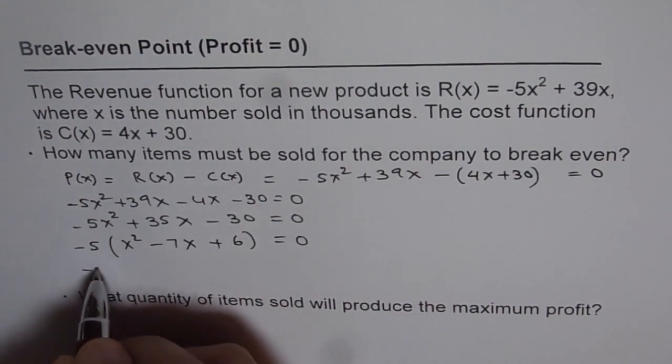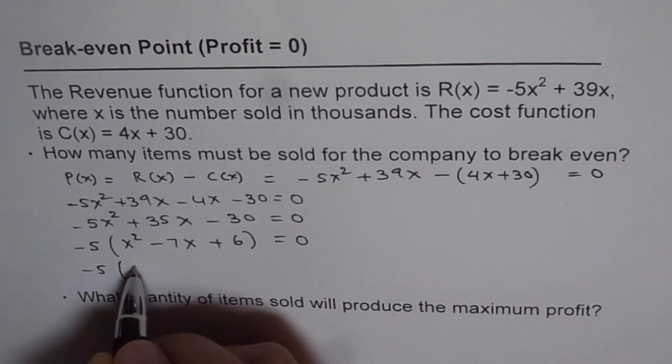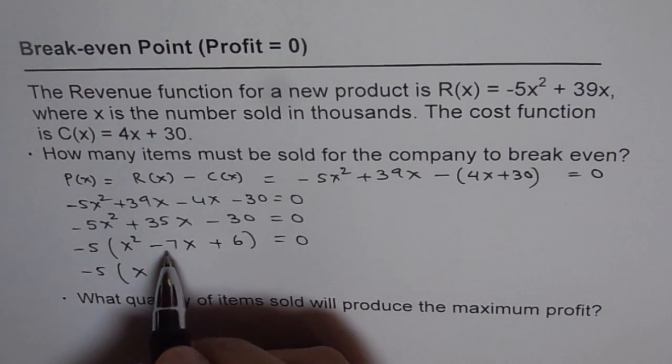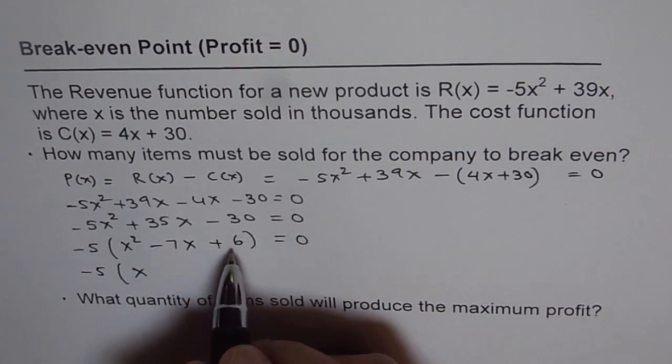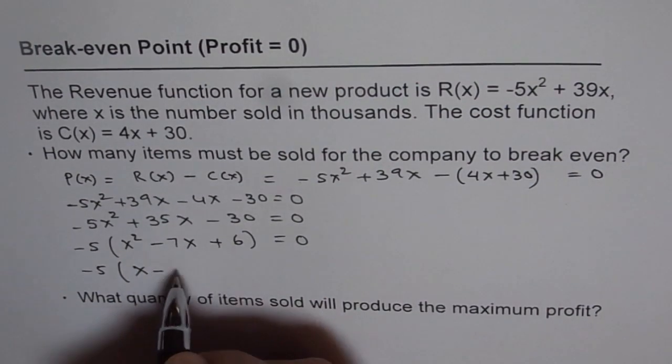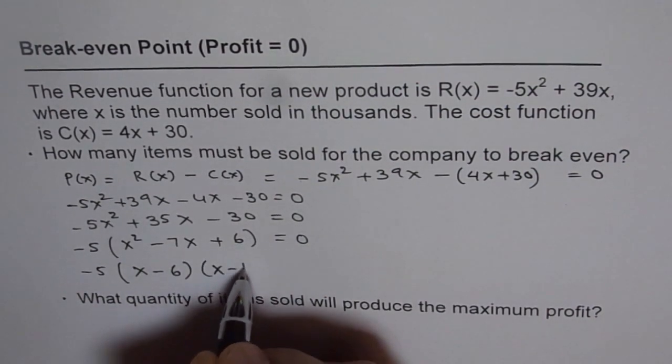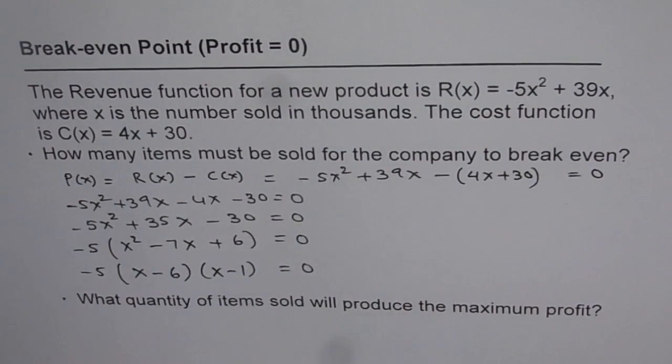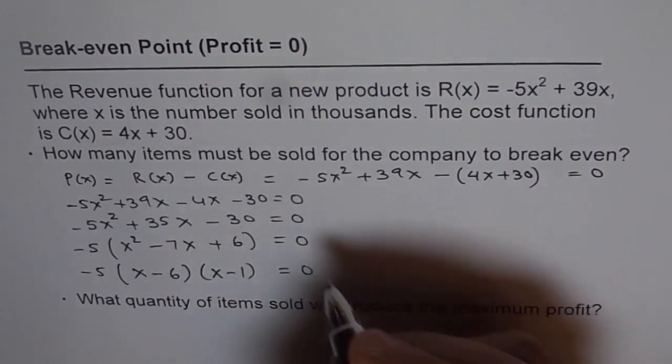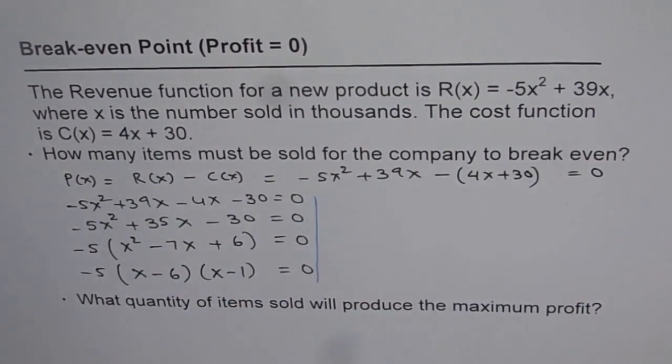Now this can be factored. We can write this as x. Now, how will you get 7? You can get it by minus 6 times minus 1. So it is (x minus 6)(x minus 1). So that is how you can factor this. Once you have factored, then you can always find the answer.